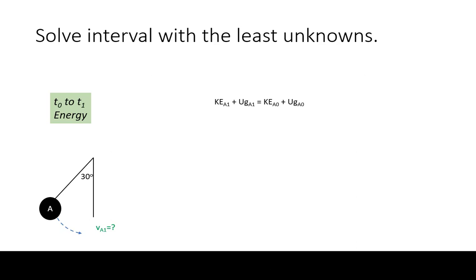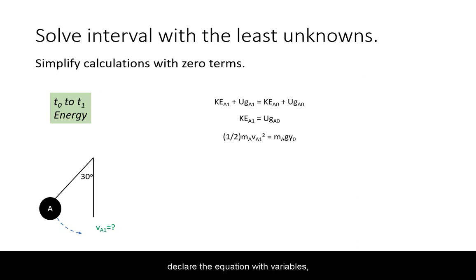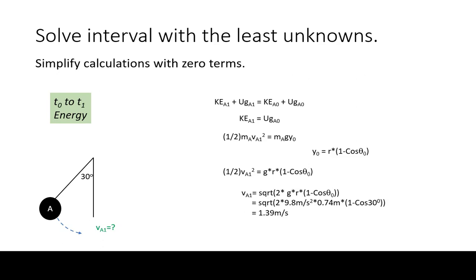In this example, the first time interval has the least number of unknowns. We will start by declaring conservation of energy. Simplify, declare the equation with variables, substituting in where necessary. Solve for the unknown, then plug in with units before reaching for the calculator.